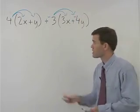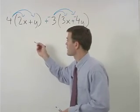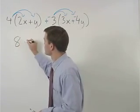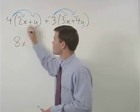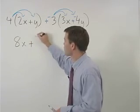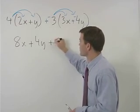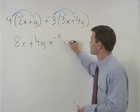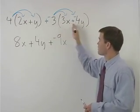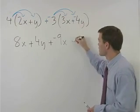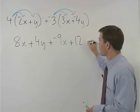That gives us 4 times 2x or 8x, plus 4 times y or 4y, plus negative 3 times 3x which is plus negative 9x, plus negative 3 times negative 4y which is plus 12y.